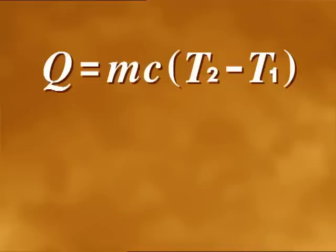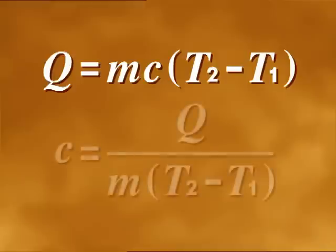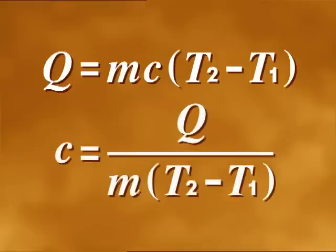The specific heat capacity of a substance is given by the heat equation. Q is heat energy added to the substance. M is the mass of the substance. C is its specific heat capacity. T1 is the initial temperature. T2 is the final temperature, so T2 minus T1 is the change in temperature. Rearrange this equation to make C the subject.